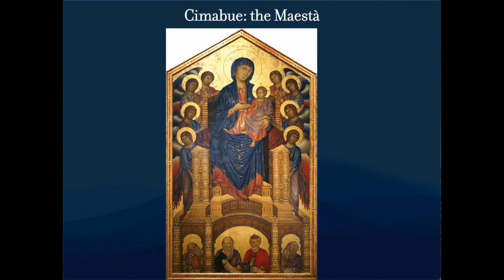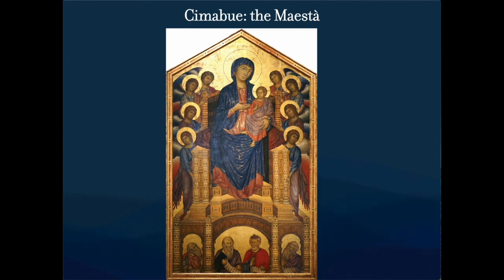Around 1280 he painted what's probably his most famous work — the Maesta — an altarpiece that would go above the tabernacle. The whole background and the halos are all gilt in gold leaf. He's painting on wood panel, probably with tempera — an egg-yolk-based paint — then overlaying gilt after. He puts down a varnish, places the gold leaf, and where he painted the varnish the gold leaf sticks.